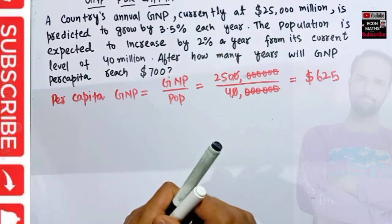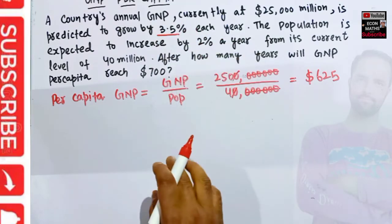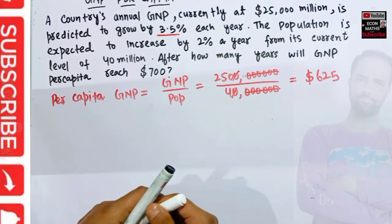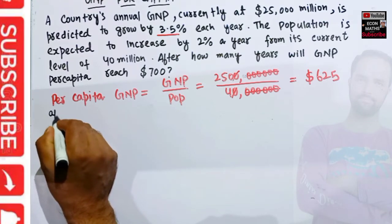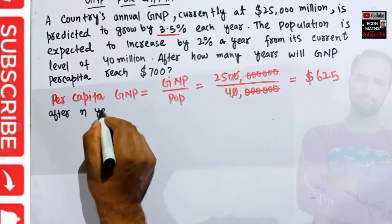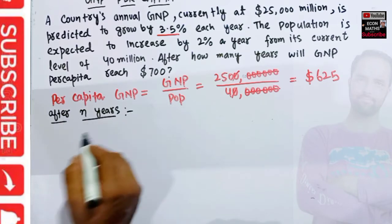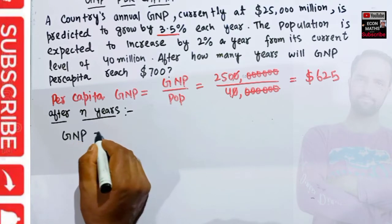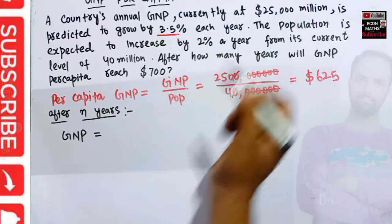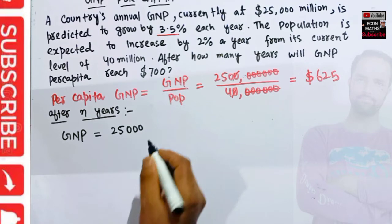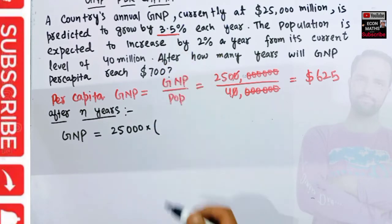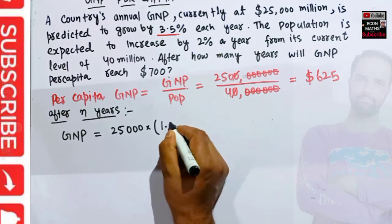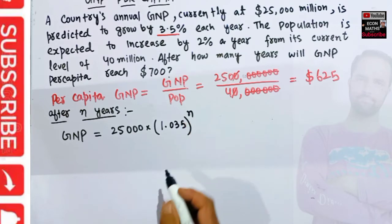We are told that GNP is growing by 3.5 percent each year. So after N years, GNP after N years will be equal to the present GNP, that is 25,000, multiplied by the scale factor of 1.035 raised to the power N.